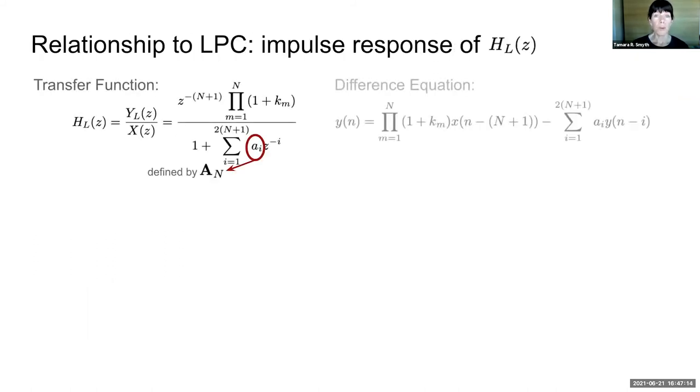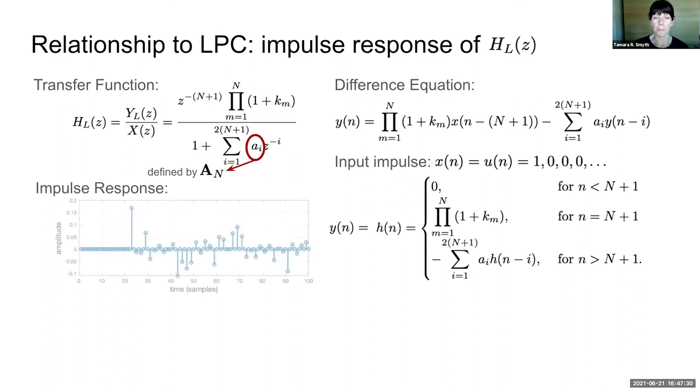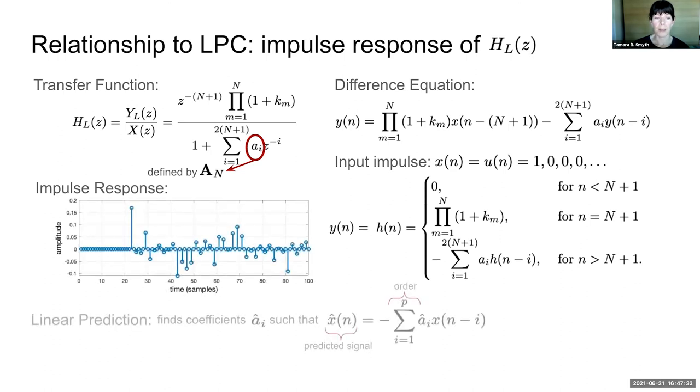If we take the impulse response of our transfer function by taking the inverse Z-transform of the transfer function to arrive at the difference equation and setting the input to an impulse or a step function, we arrive at the impulse response. If we feed that impulse response to an LPC or linear prediction, it will give us the exact coefficient vector.